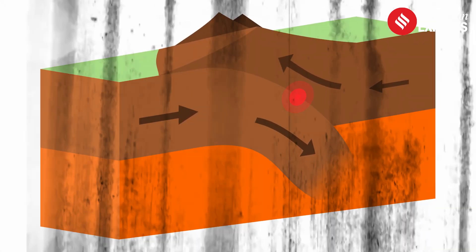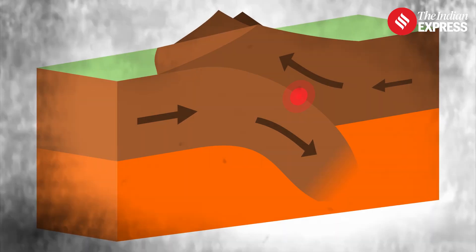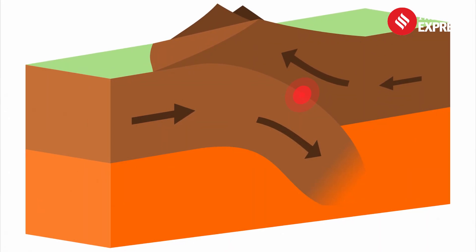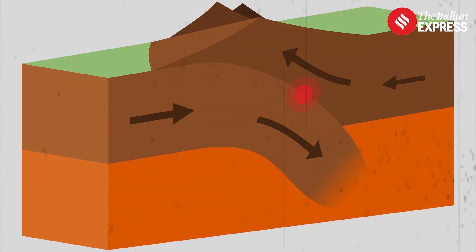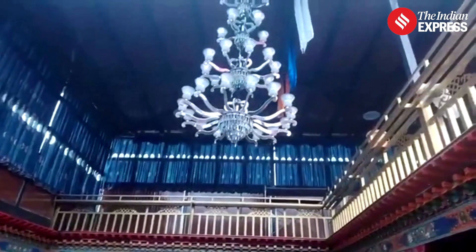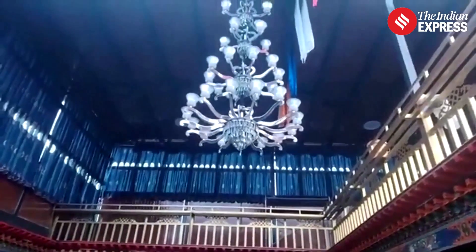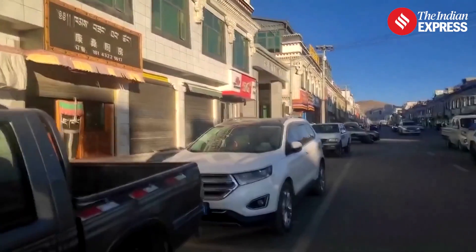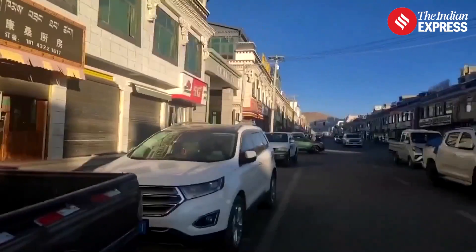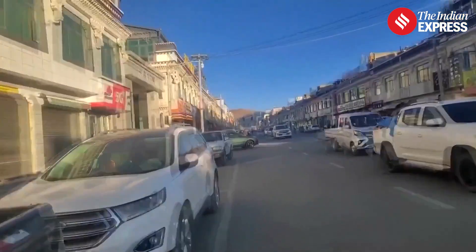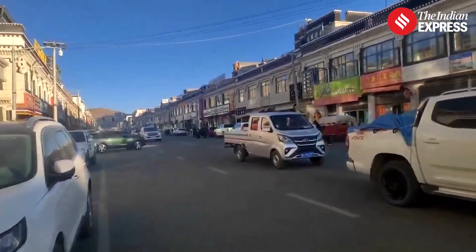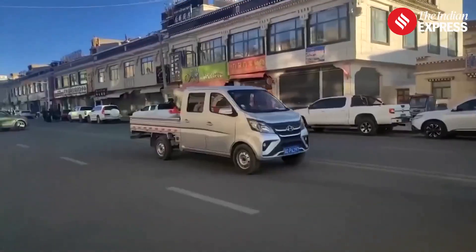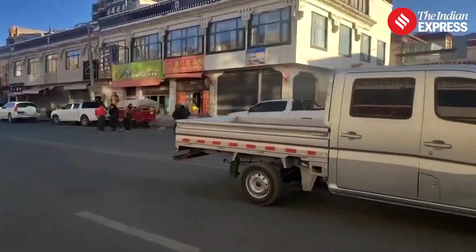The strength or intensity of an earthquake depends on how much energy is released and how far the seismic waves travel. The Earth's crust is divided into several large and small pieces known as tectonic plates. Earthquakes happen when these plates shift or collide with one another, causing stress to build up at plate boundaries.